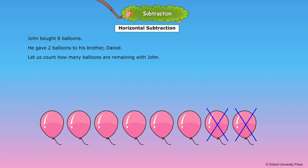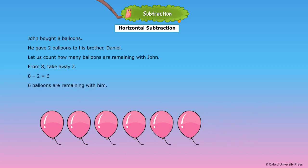Let us count how many balloons are remaining with John. From 8, take away 2. 8 minus 2 is equal to 6. 6 balloons are remaining with him.